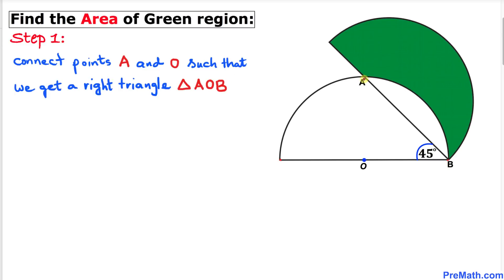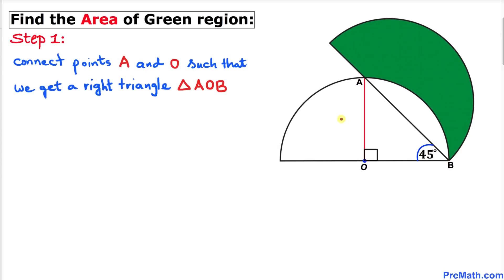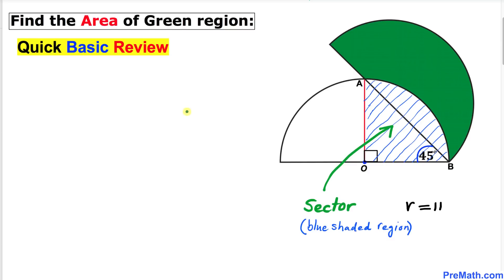Let's go ahead and connect this point A with this center O. Let's connect these two points, and here's our much nicer looking diagram. As a result we get our right triangle AOB, and moreover this radius is 11 units. Now let me go over this basic review pretty quick.